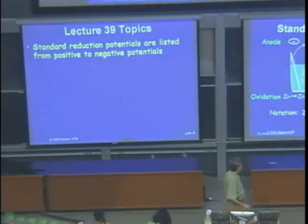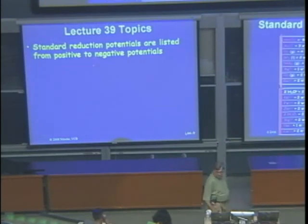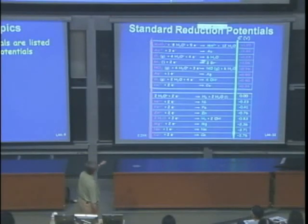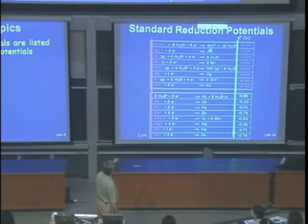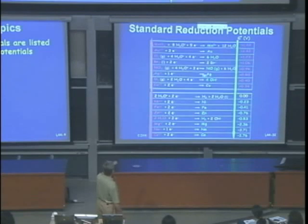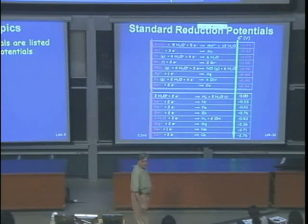Standard reduction potentials are listed from most positive to most negative. Species with more positive reduction potentials get reduced (cathode); those below get oxidized (anode). For example, gold has a very positive reduction potential and gets reduced; silver, being lower, would get oxidized. The cathode is always the reduction half-cell (RedCat) and sits on the right side of the cell notation.